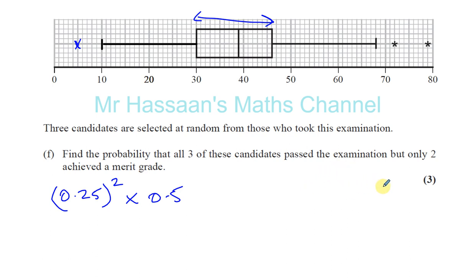You can say merit grade, merit grade, passed. You can say merit grade, passed, merit grade. You can say passed, merit grade, merit grade. There's three different ways that this could have happened. So you have to multiply this by three.